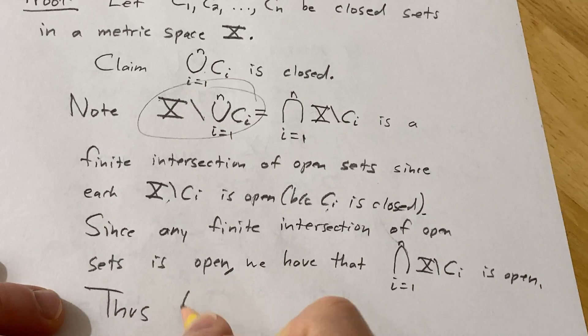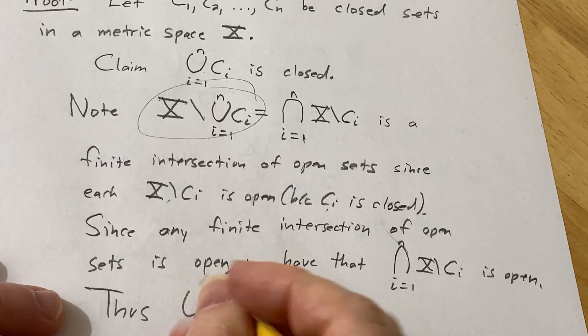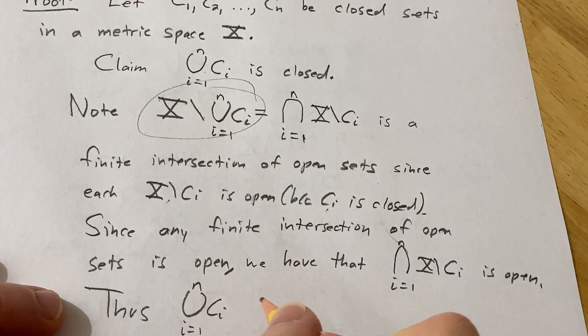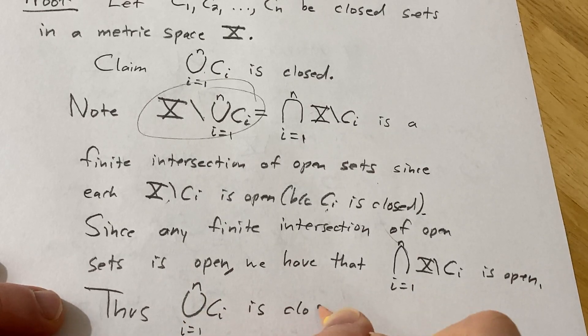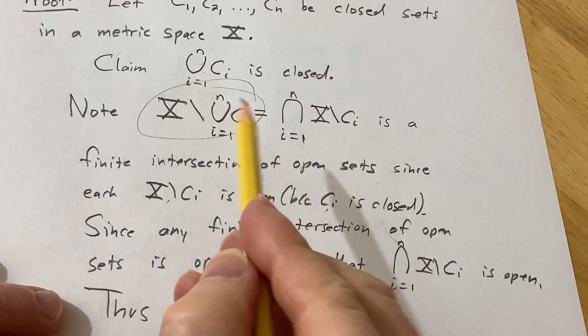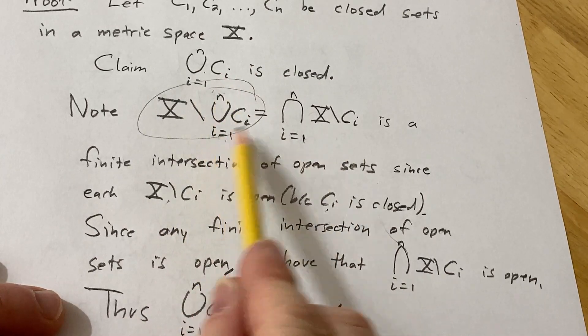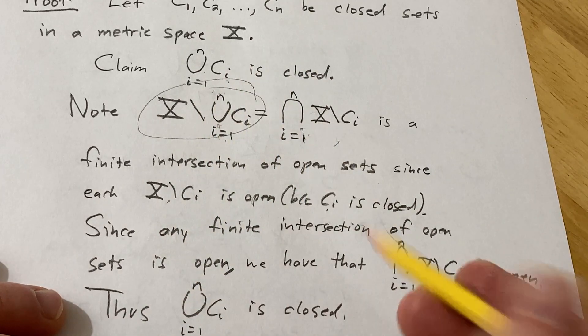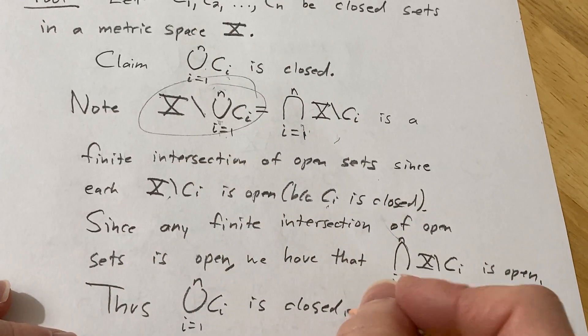So thus, the union as i runs from 1 to n of the C sub i's is closed. Right, because we showed that the complement of this set, which is this one, is open, therefore this one is closed. And that completes the proof.